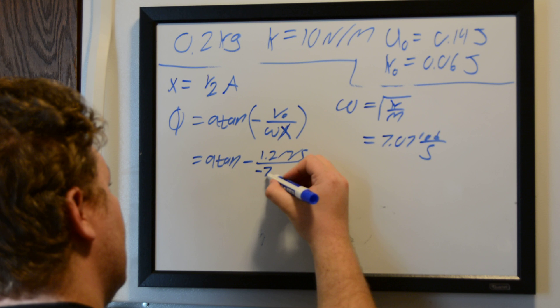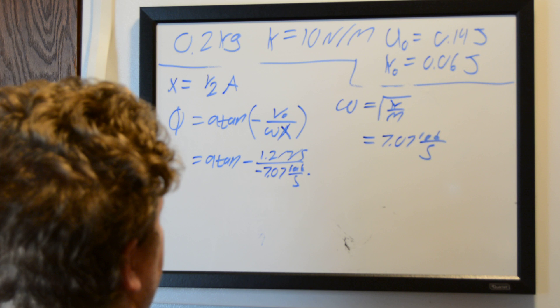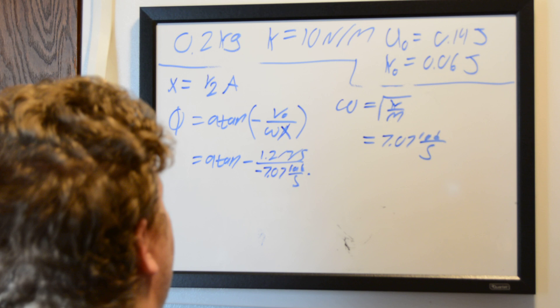7.07 radians per second. And then we have our position, which we can find from what we did earlier with our equation for potential energy of a spring.